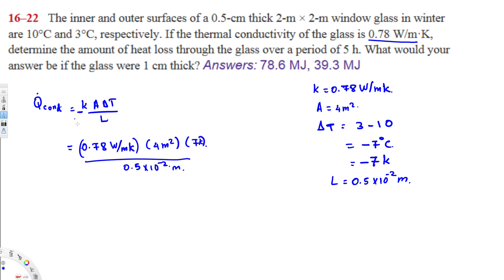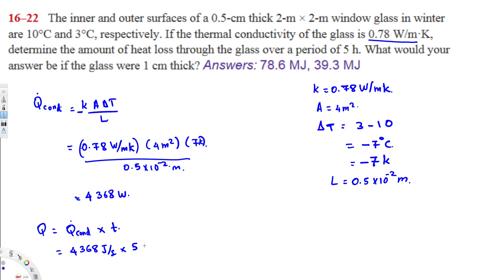Calculating this gives Q̇ = 4368 watts, i.e., 4368 joules per second. To find the total heat loss over five hours, we multiply by time: Q = 4368 J/s × 5 hours × 3600 s/hour. The seconds cancel, leaving the answer in joules.